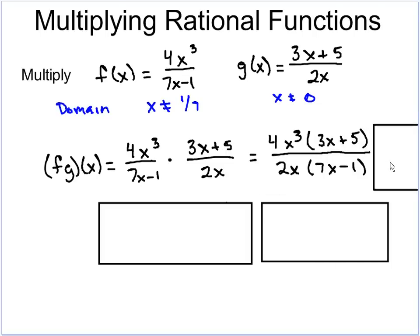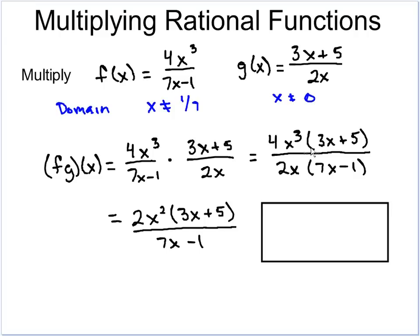We're going to multiply them straight across. Notice I arranged it so you can see where we can reduce things — when multiplying, you can reorder terms since 3 times 4 equals 4 times 3. Now that we've got them together, we actually have to reduce. The 3x plus 5 and the 7x minus 1 can't be reduced — they're not the same. However, the 4x³ and the 2x can be reduced: 4 divided by 2 is 2, and x³ divided by x is x². Resist the urge to cancel the x in the denominator terms that are in subtraction — you have to cancel the whole factor together.